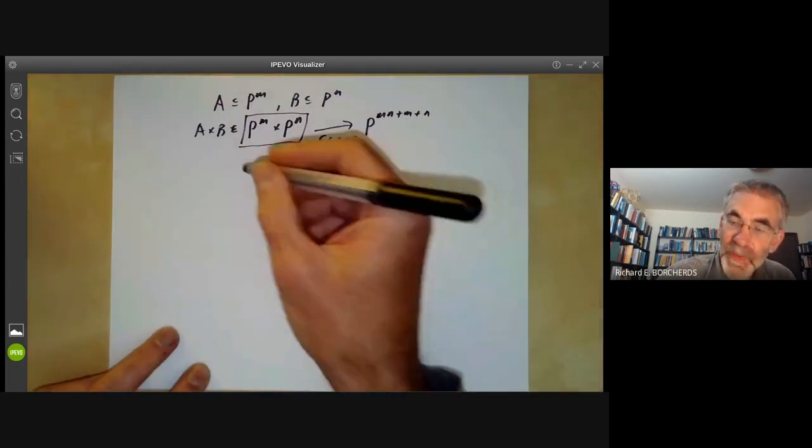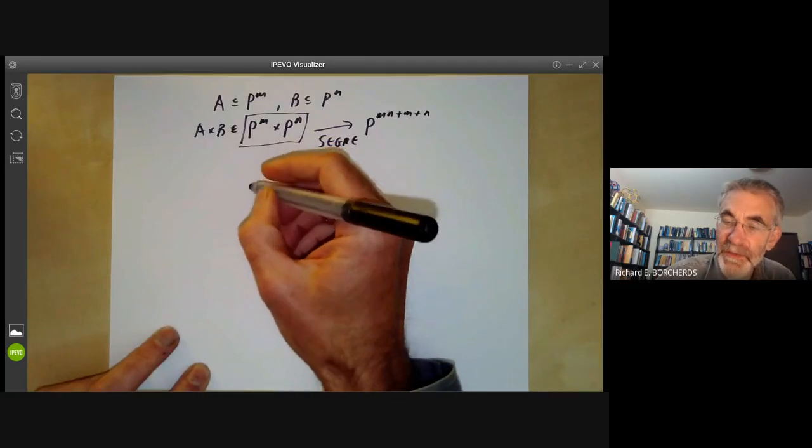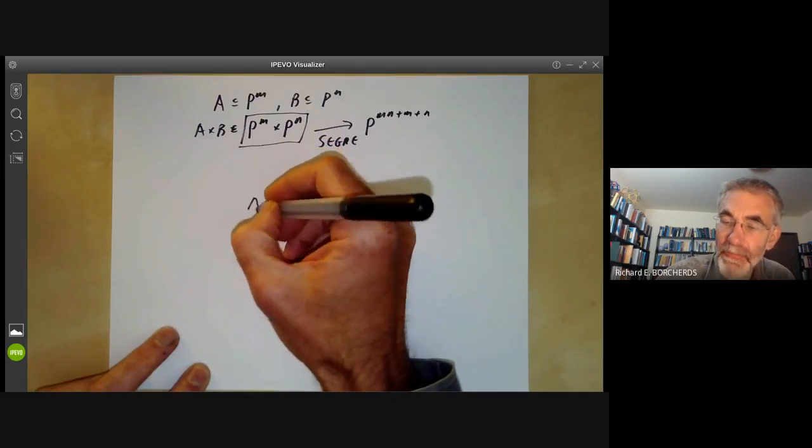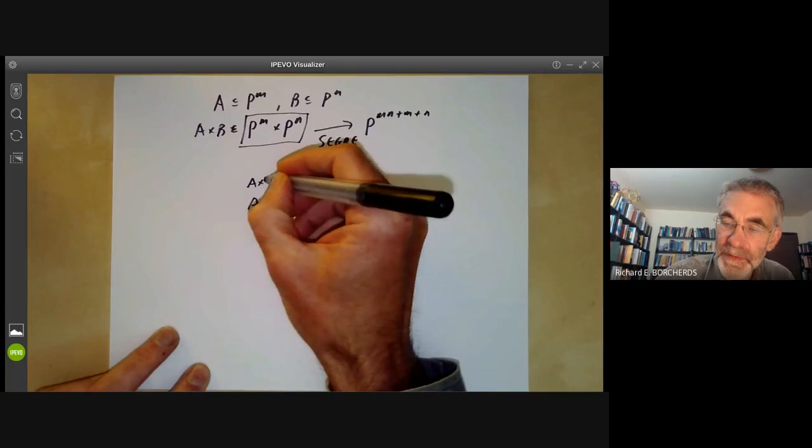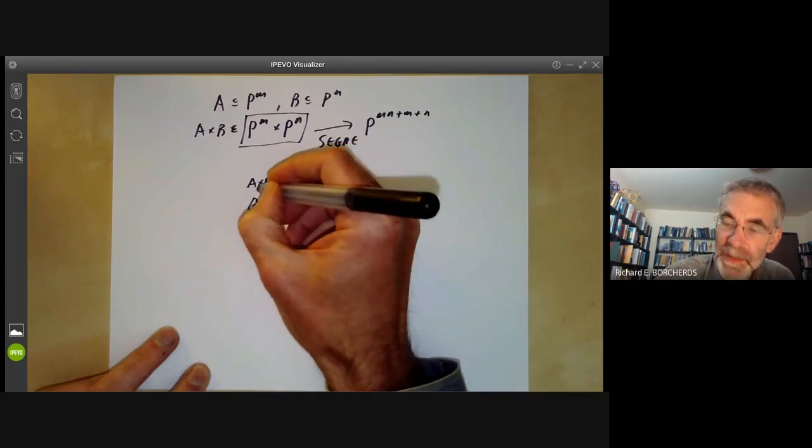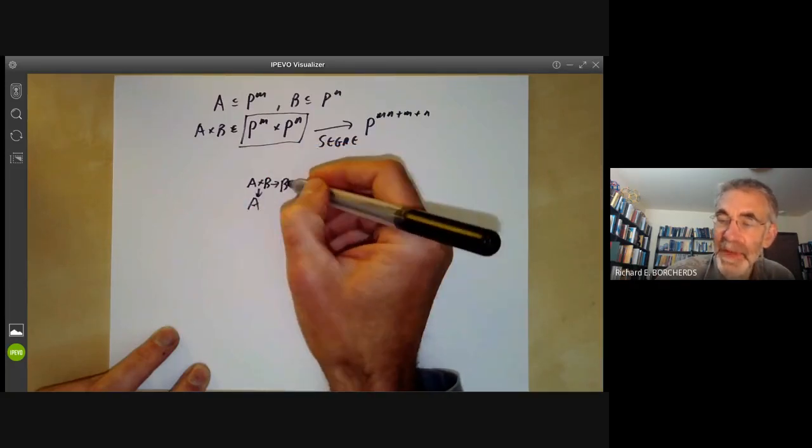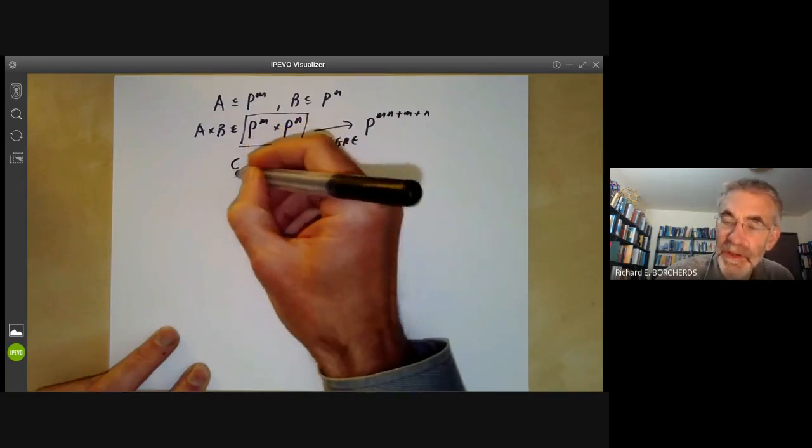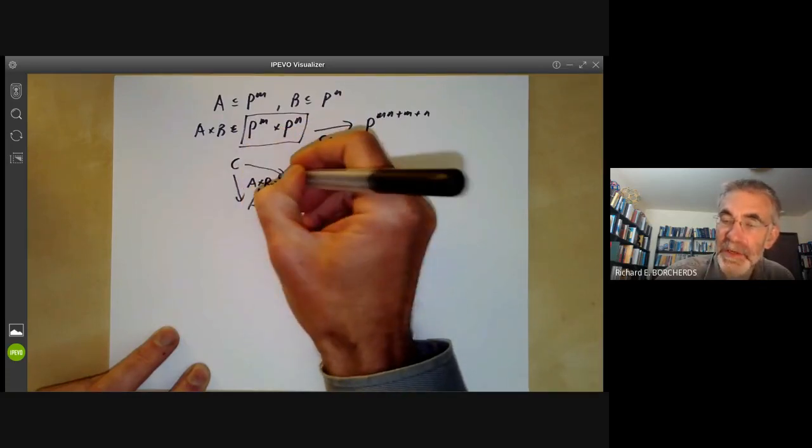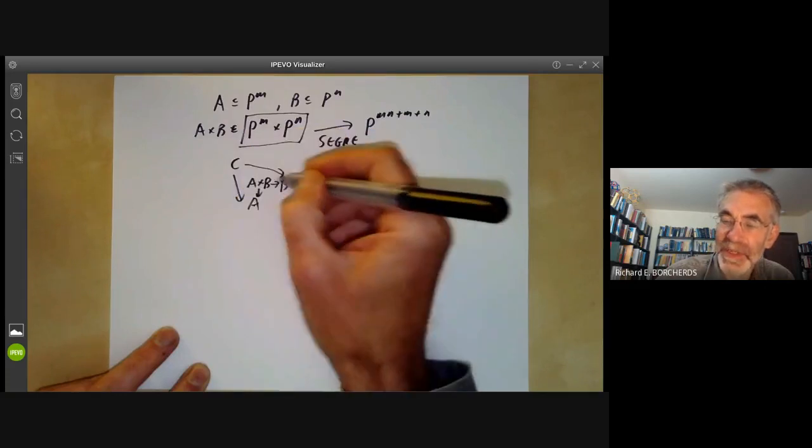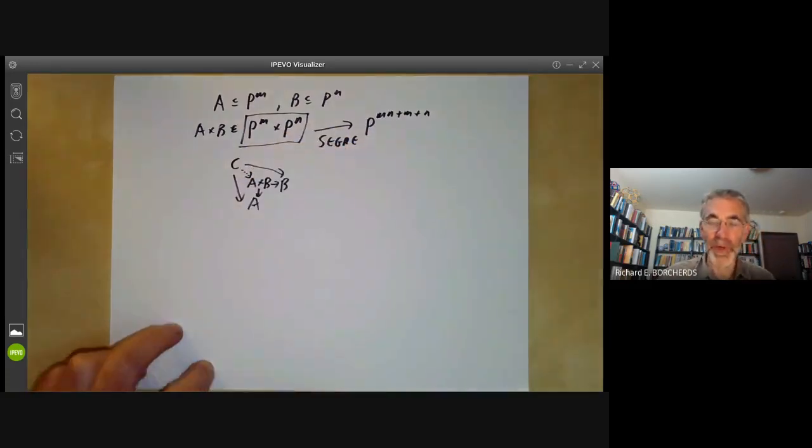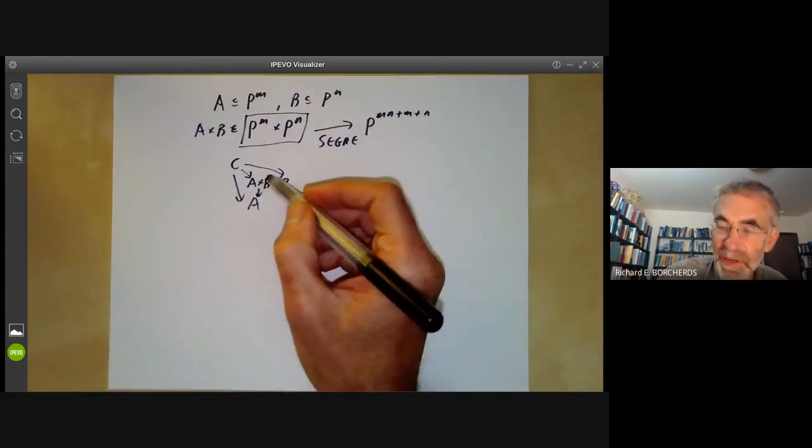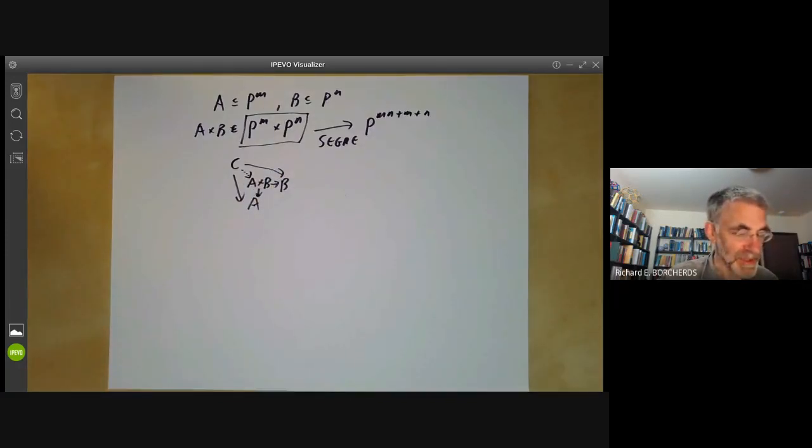So you recall that a product of two objects A and B is an object which maps to A and maps to B and is universal for this property. So if we've got another object with maps to A and B, then it factors uniquely through the product. So we just have to check the Segre embedding has these two properties.